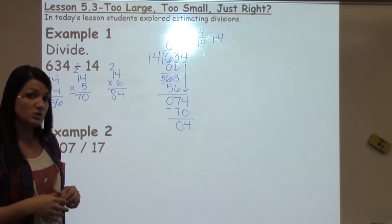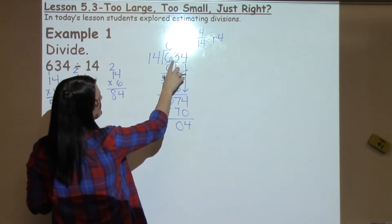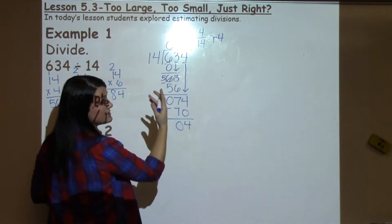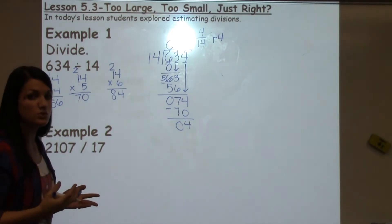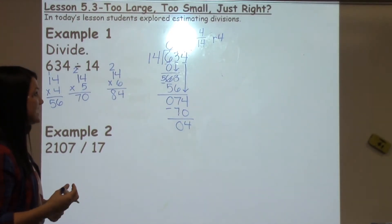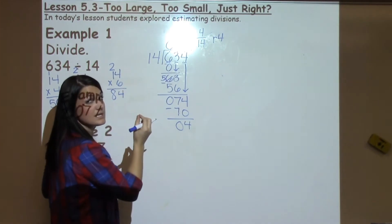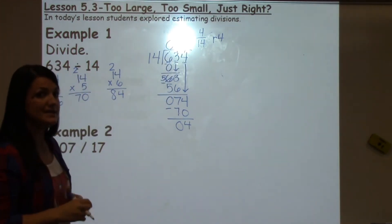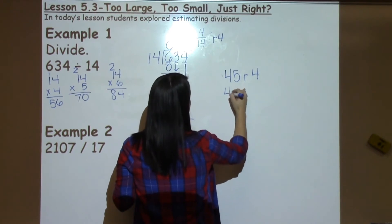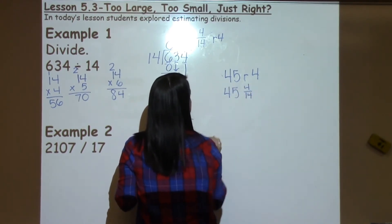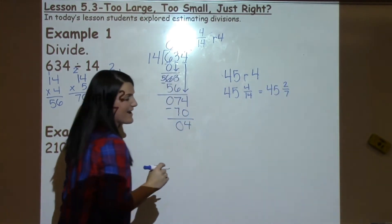A helpful way to check you're finished: however many digits are on the inside of the division problem — in this case three digits — there should be that same number of digits on top when you're done, including zeros. So the final answer would be either 45 remainder 4, or 45 and 4/14ths, which reduces to 45 and 2/7ths, going back to what we learned about fractions.